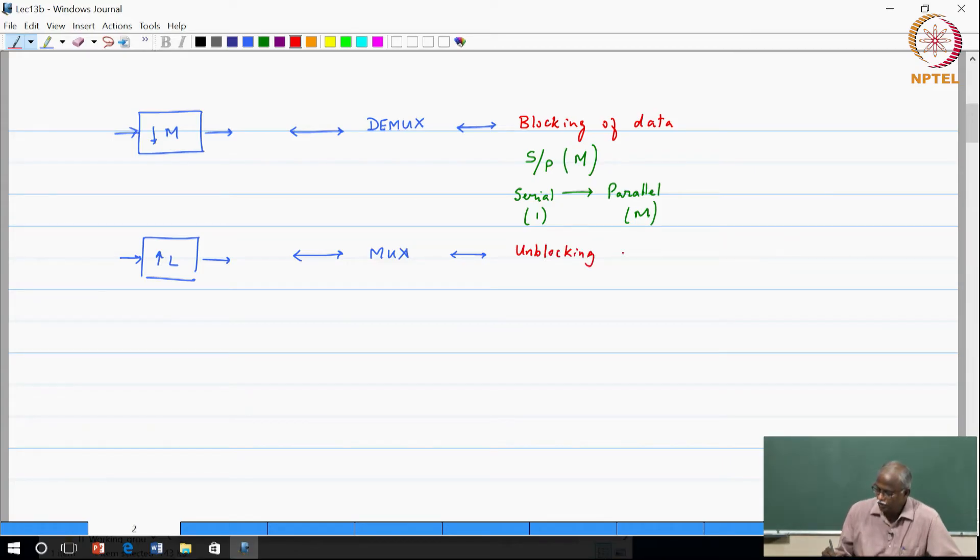This can be viewed as the unblocking of data, that is removing the blocks and making it into a serial stream, unblocking of data. And this we would refer to as a parallel to serial converter of dimension L.